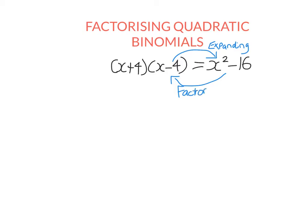Expanding and factorizing undo each other in exactly the same way that multiplication and division do. If you take a number, multiply it by four, then divide by four, you're back where you started. It's the same with expanding and factorizing — they undo each other. So today we're going to look at expressions and write them as the product of factors — one factor multiplied by another factor. That is why we call it factorizing.